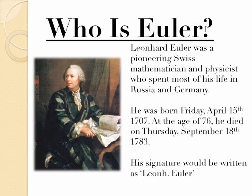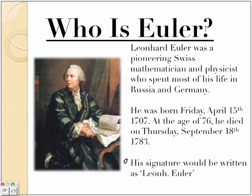Leonhard Euler was a pioneering Swiss mathematician and physicist who spent most of his life in Russia and Germany. He was born on Friday, April 15, 1707, and at the age of 76, he died on Thursday, September 18, 1783. And fun fact, again, at the bottom, right here. His signature would be written as Leonh. Euler.